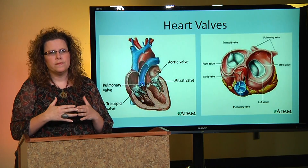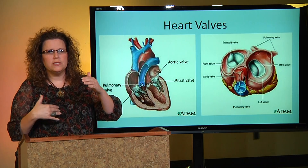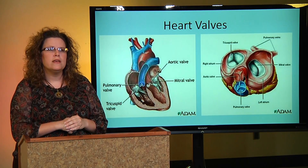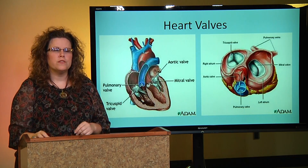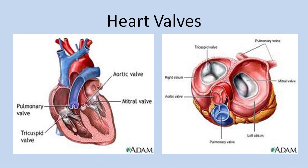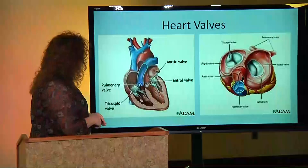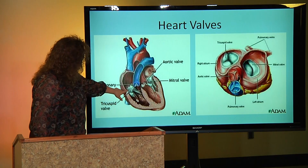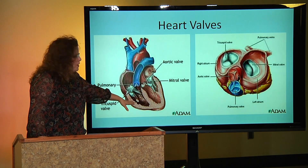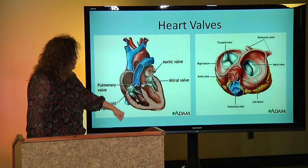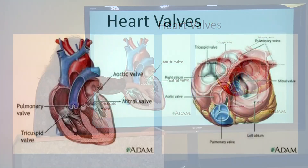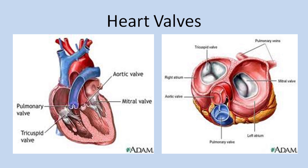Dividing those chambers — the atrias and the ventricles — and allowing blood to get out through the vessels of the heart, we'll talk about the four valves of the heart. There are atrioventricular valves, which divide the atria from the ventricles. There are two of them: the tricuspid valve, which divides the right atrium from the right ventricle, and the mitral valve, which divides the left atrium and the left ventricle.